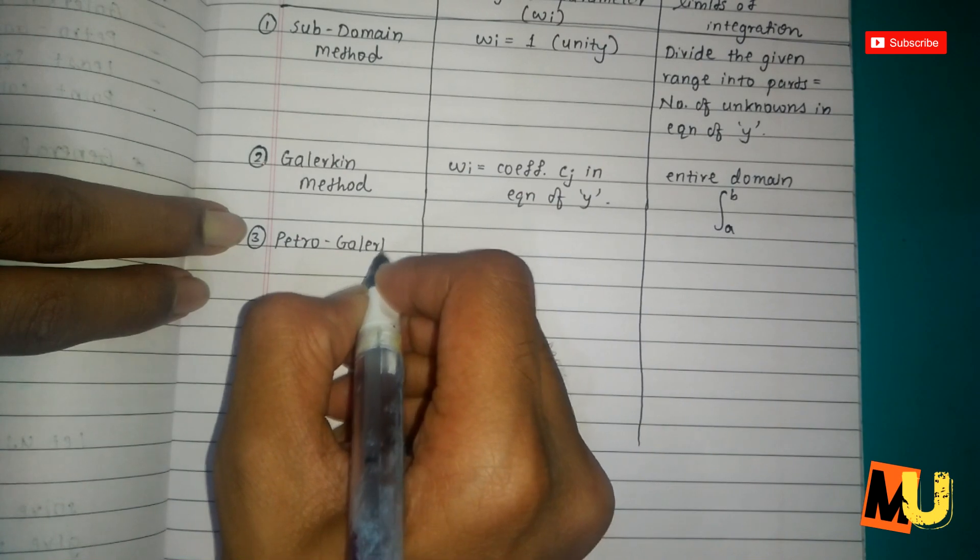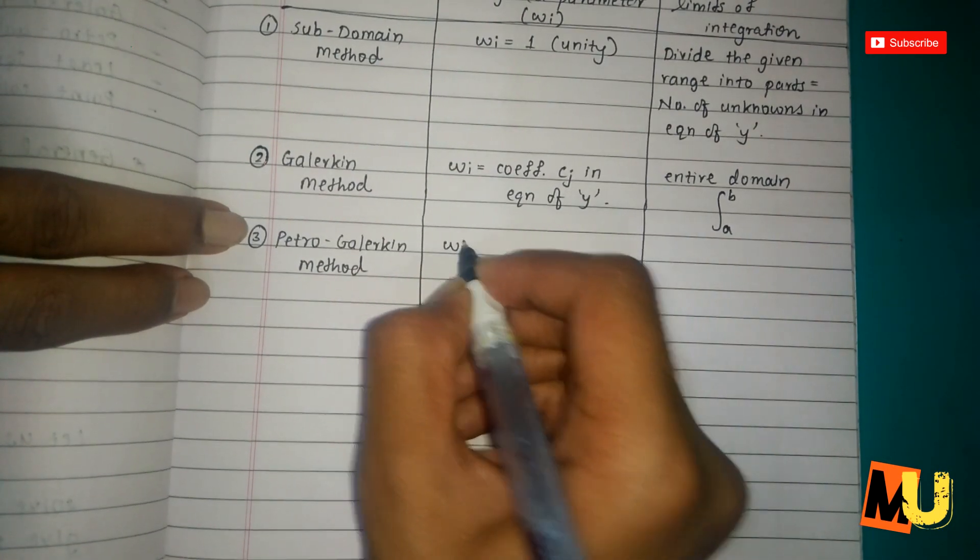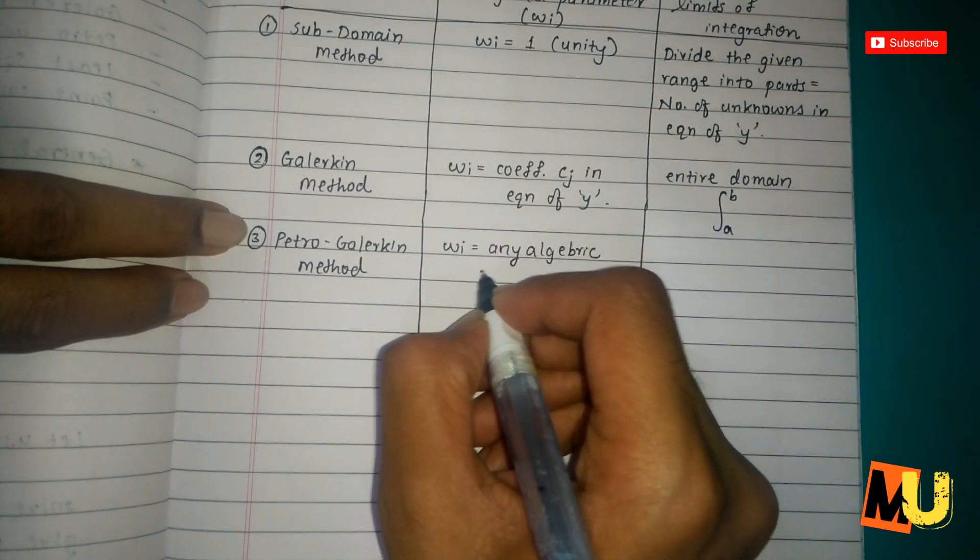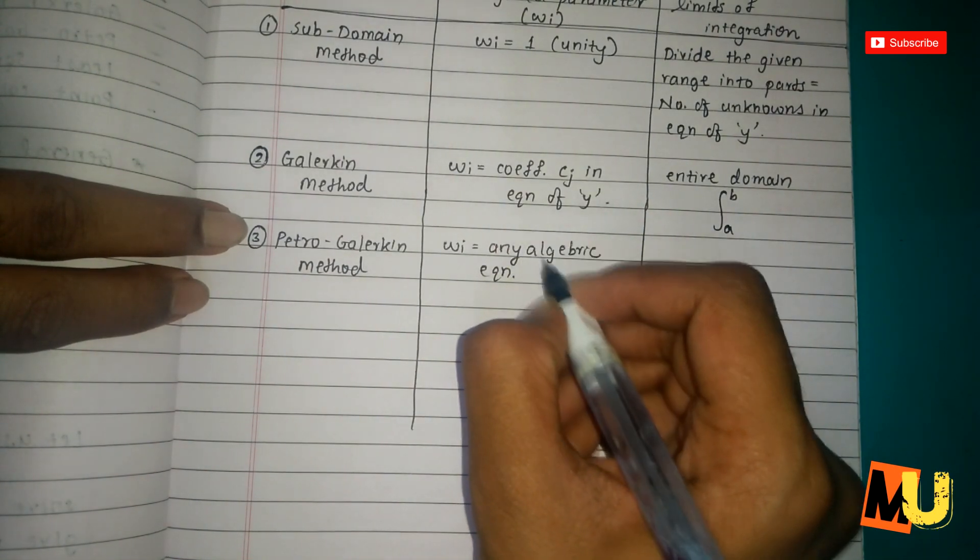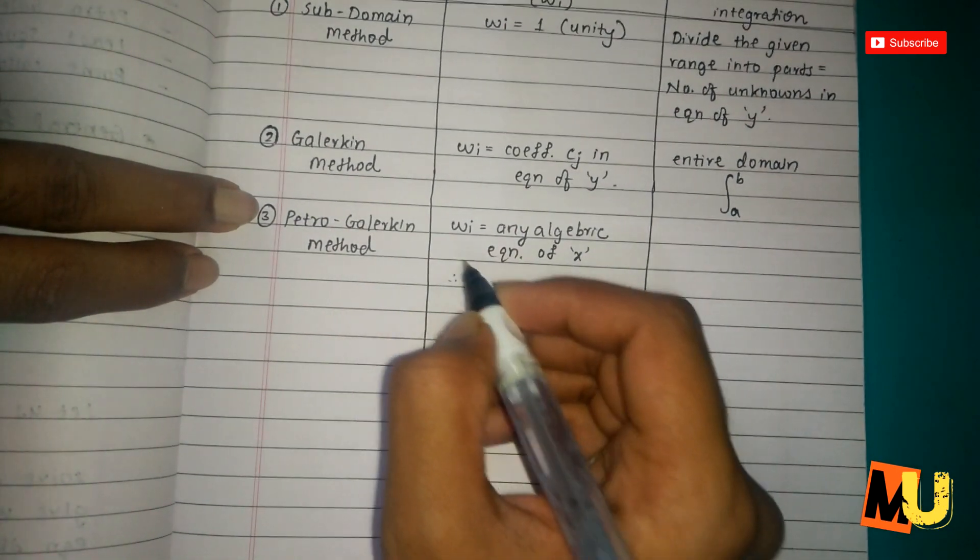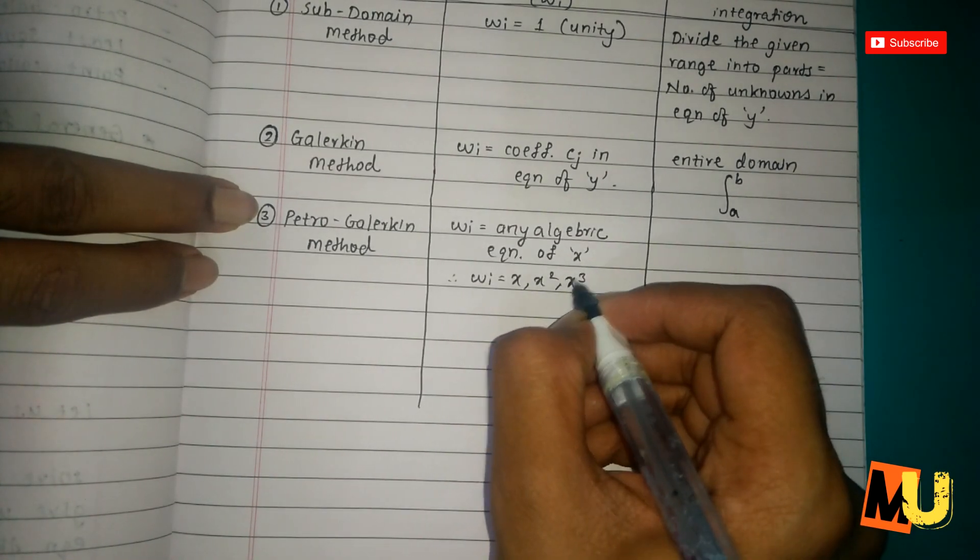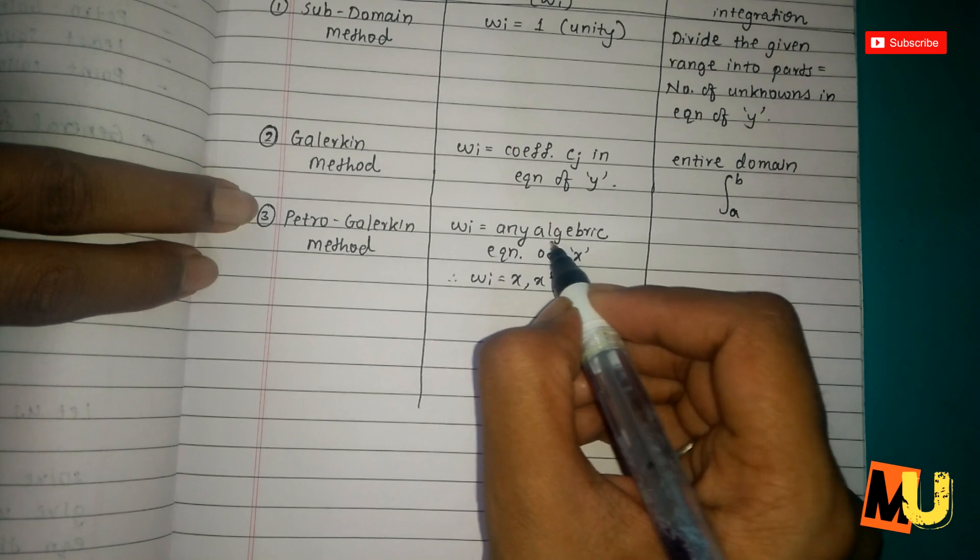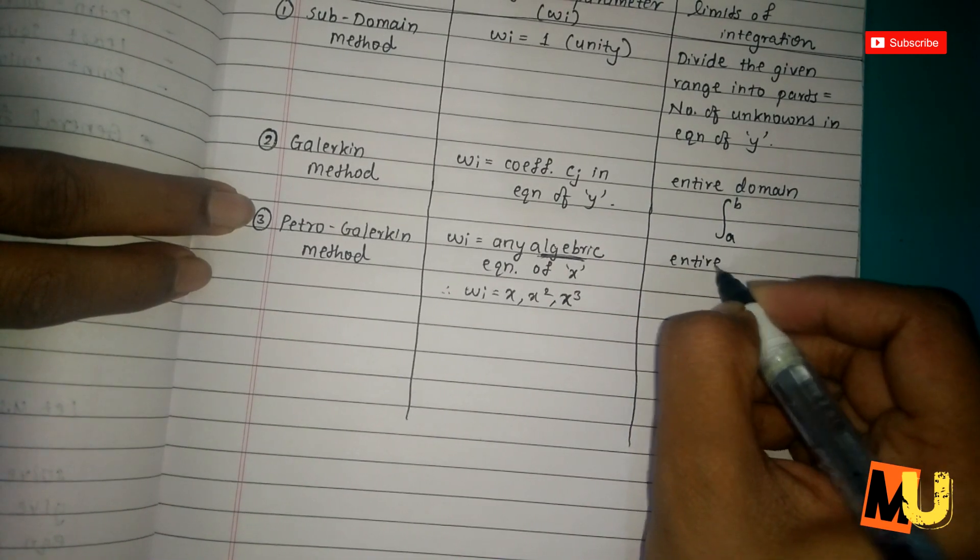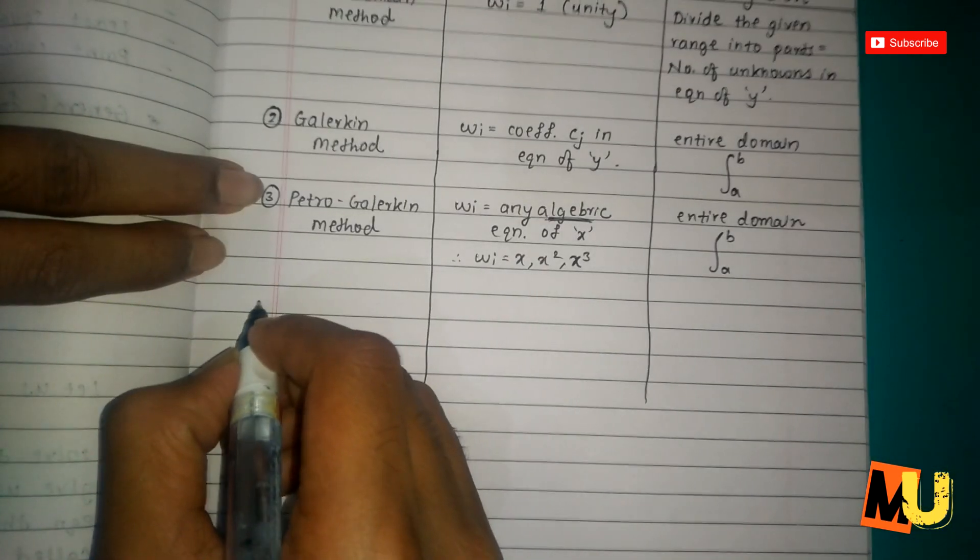Then the third, that is Petrogalerkin's method. w_i equals any algebraic equation of x. That is w_i equals x, x², x³, anything we can take, any algebraic. And the entire domain, that is a to b.